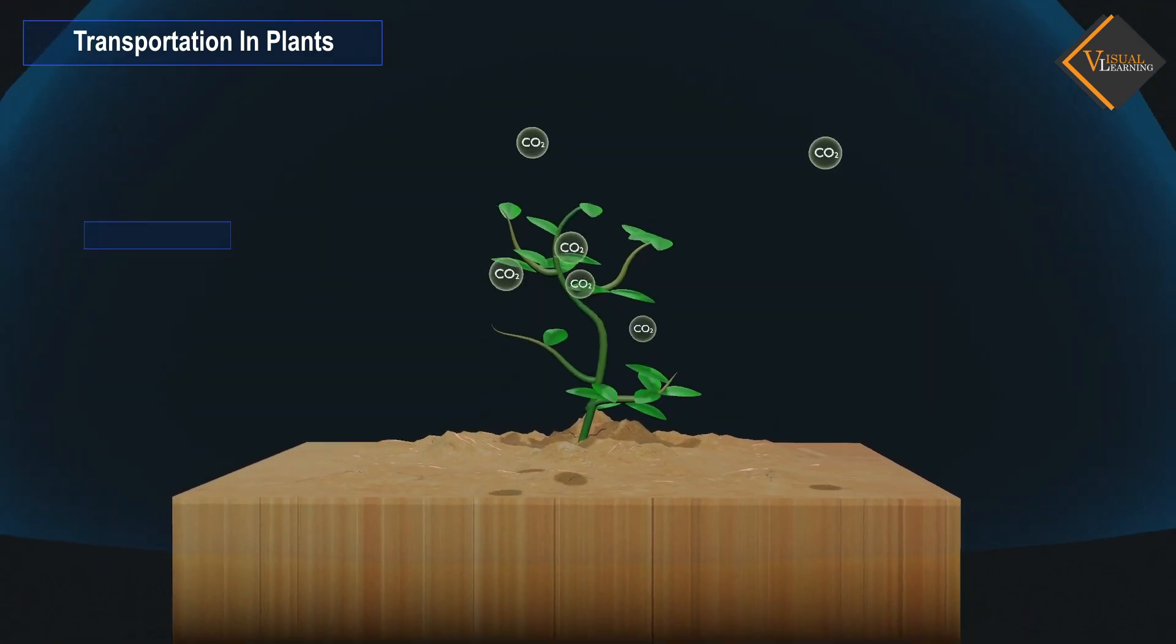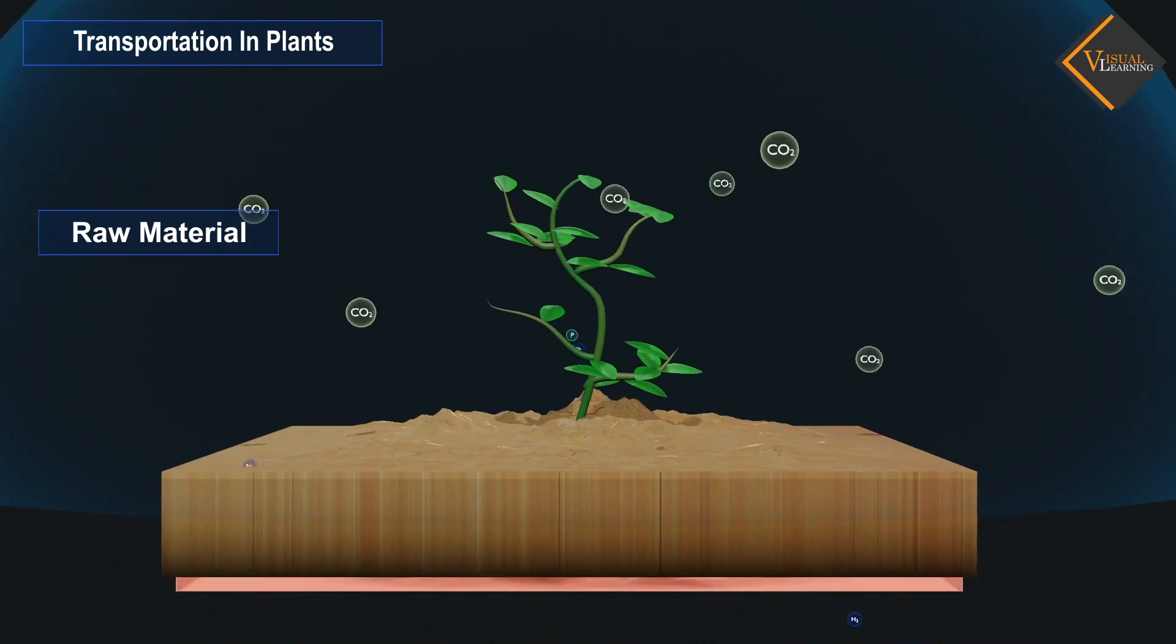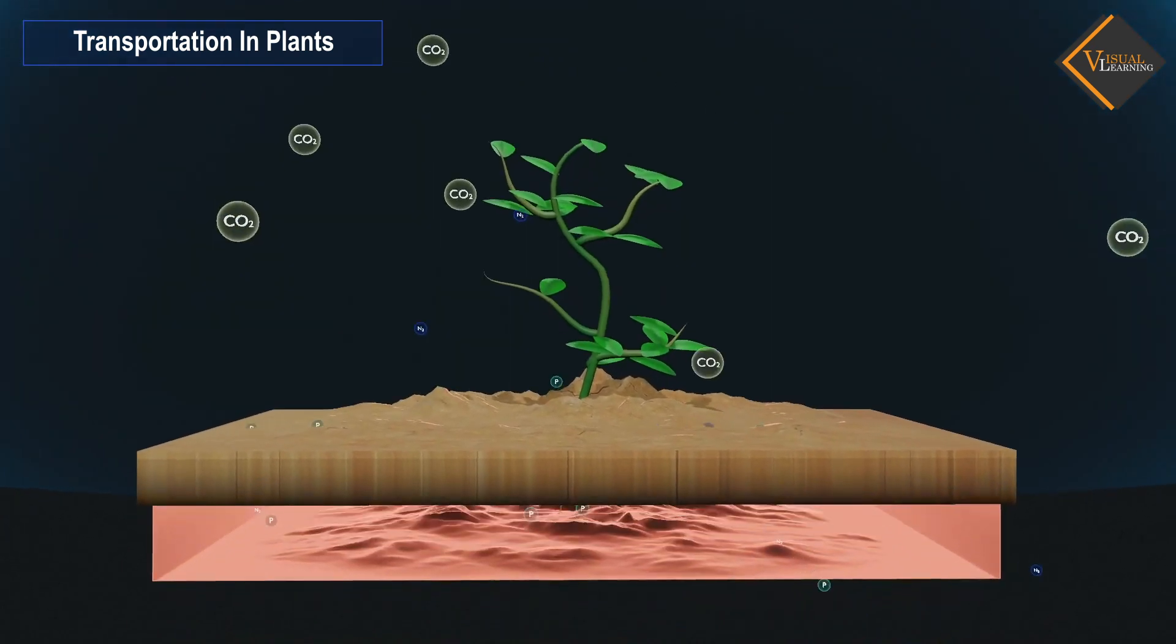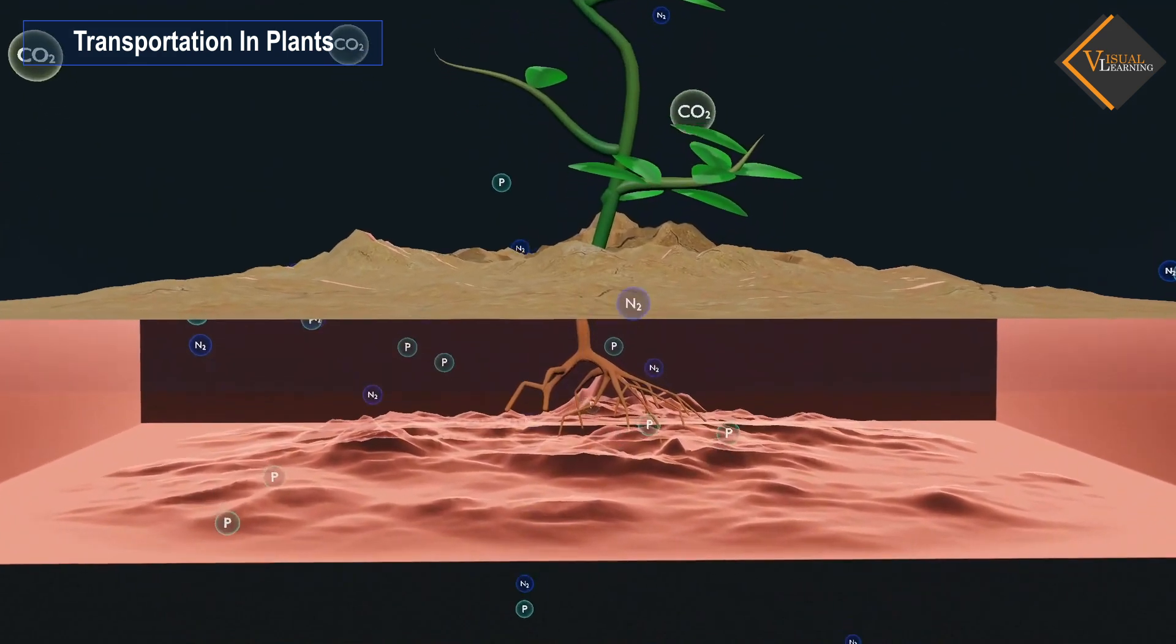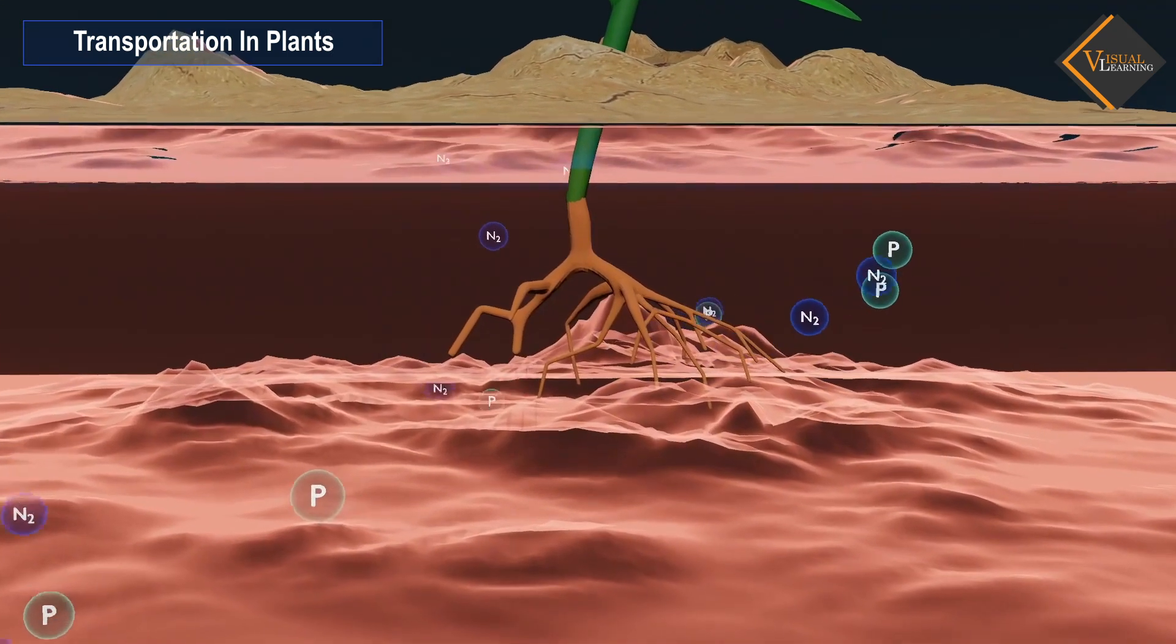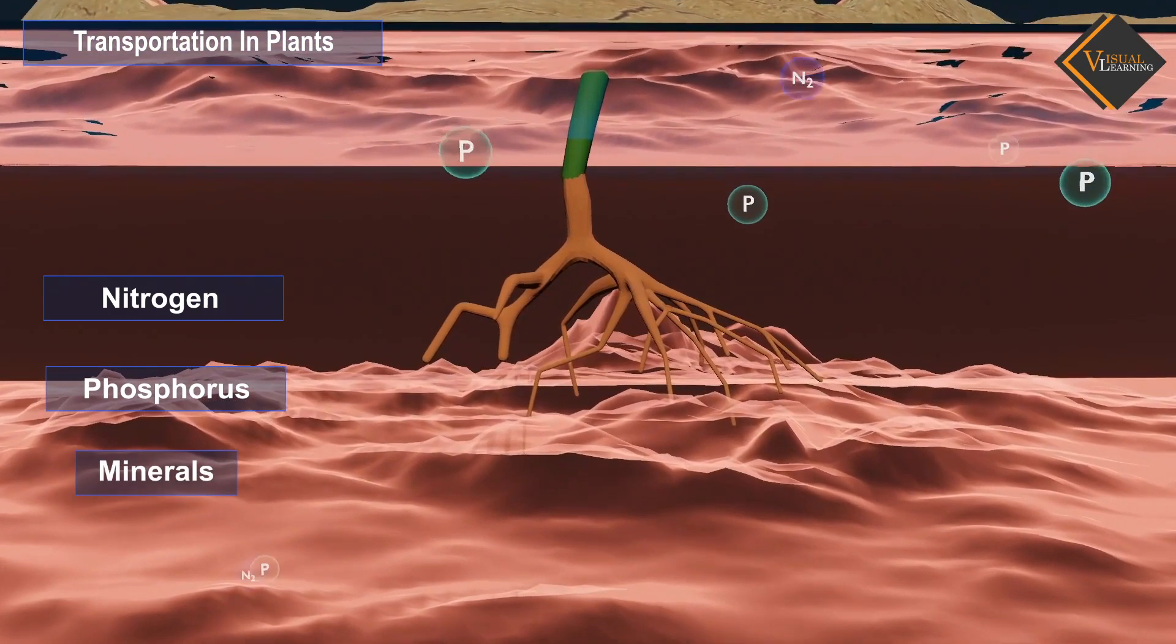The other kinds of raw materials needed for building plant bodies will also have to be taken up separately. For plants, the soil is the nearest and richest source of raw materials like nitrogen, phosphorus, and other minerals.